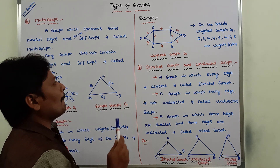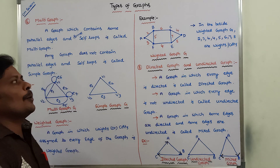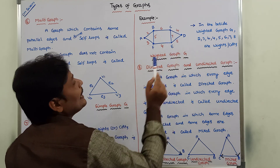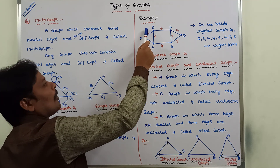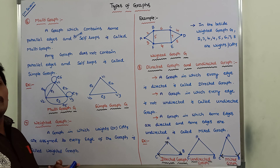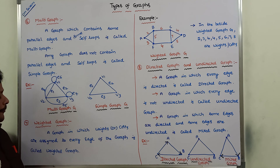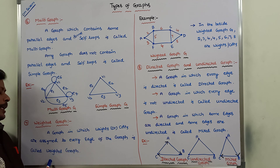Consider this graph example. There are six vertices: A, B, C, D, E, F, and eight edges. Every edge has a particular weight or cost — this is called the edge weight or edge cost. A graph in which weights or costs are assigned to every edge is called as weighted graph.